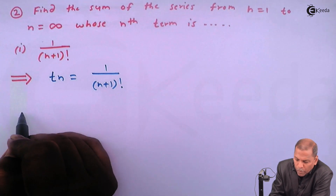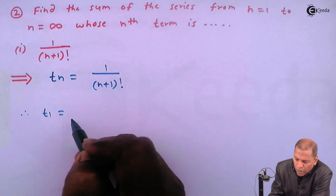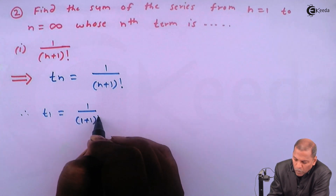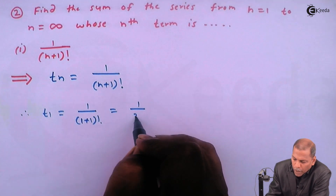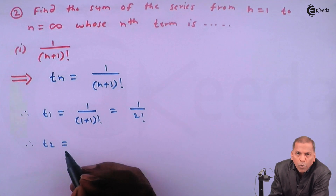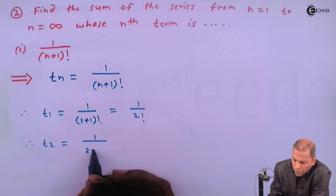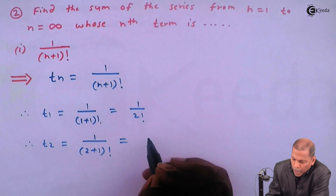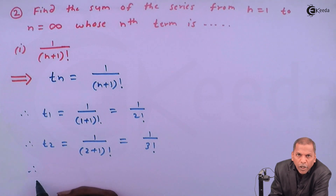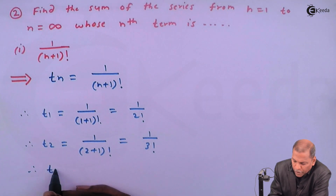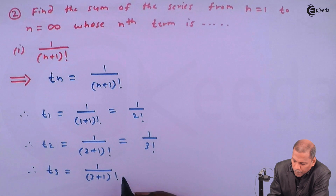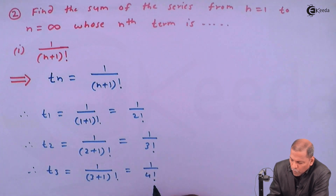Now put n equal to one, so we have t_1 equal to one upon (one plus one) factorial, that is one upon two factorial. Put n equal to two, so we get one upon (two plus one) factorial, that is one upon three factorial. Then put n equal to three, so we get t_3 equal to one upon (three plus one) factorial, that is one upon four factorial.